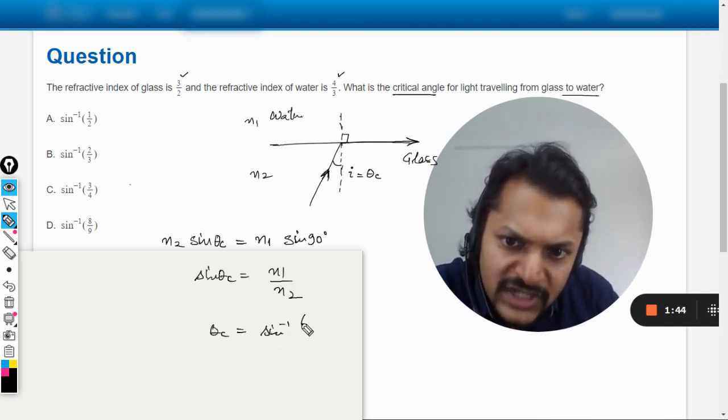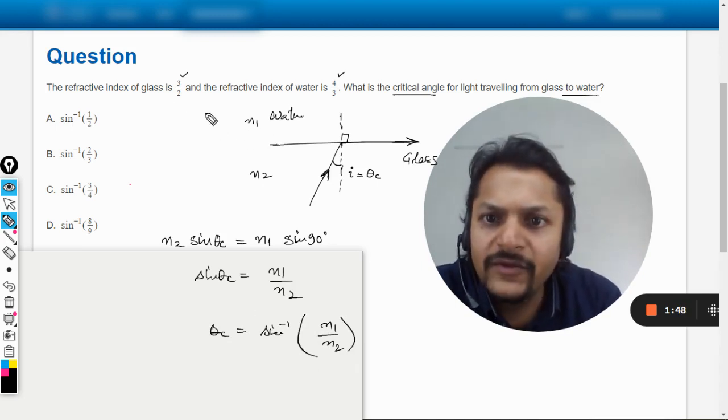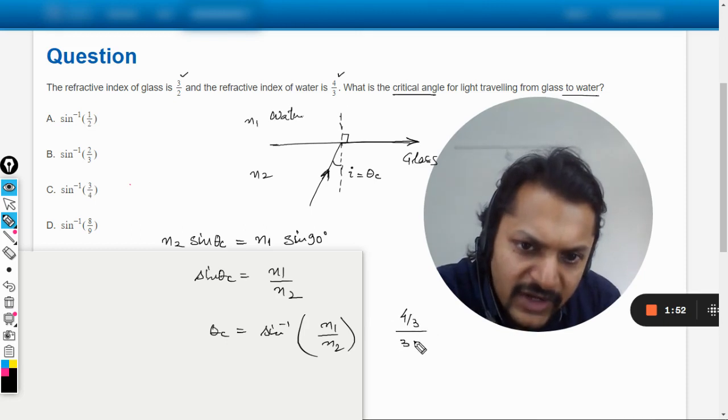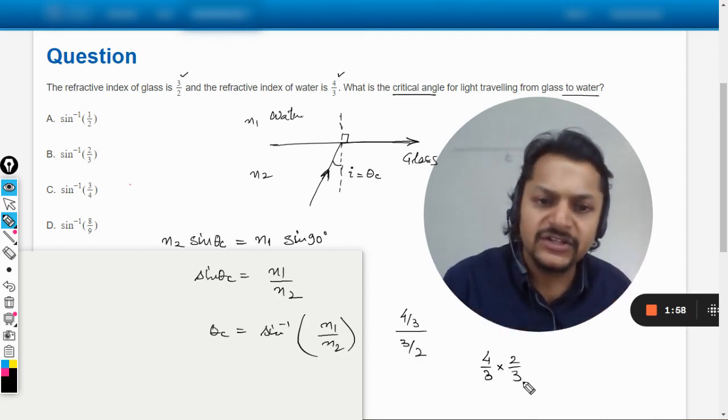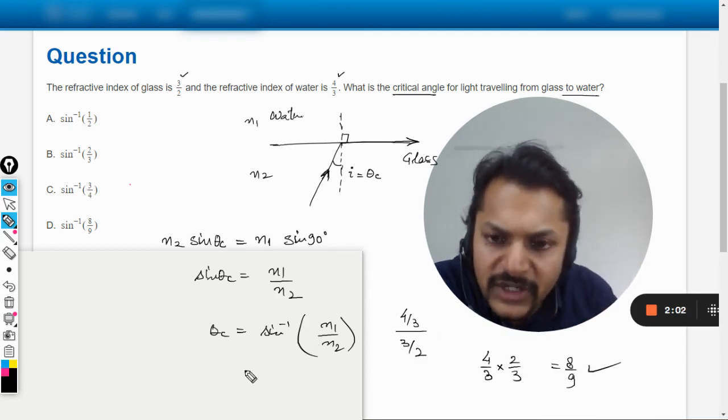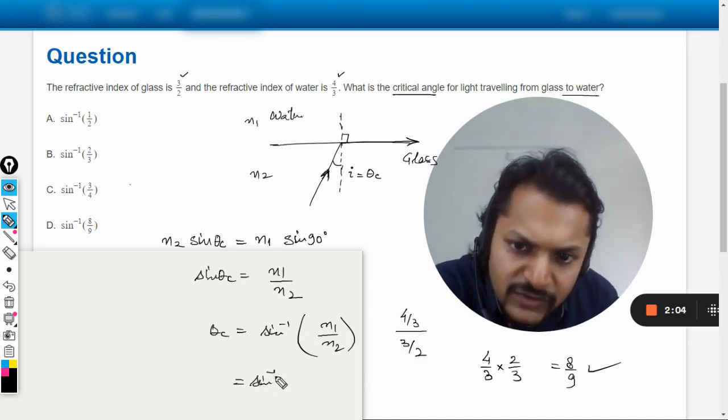Now n1 for water it is 4 by 3 divided by 3 by 2. So this can be calculated by just doing the reciprocal and multiplying each other, so it will be 8 divided by 9. So this becomes 8 divided by 9, so your answer is sine inverse 8 by 9 and so the answer is going to be D.